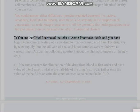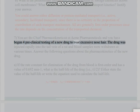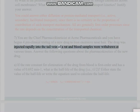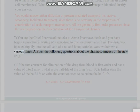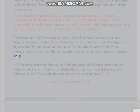Problem 7: You are the chief pharmacokineticist at Acme Pharmaceuticals and you have begun preclinical testing of a new drug to treat excessive nose hair. The drug was injected rapidly into the tail vein of a rat and blood samples were withdrawn at various times. Answer the following questions about the pharmacokinetics of the new drug.